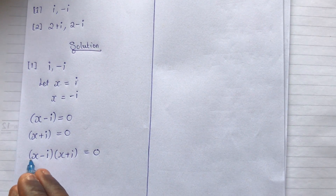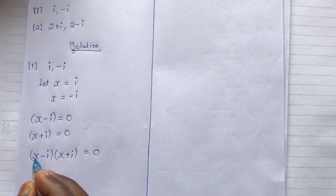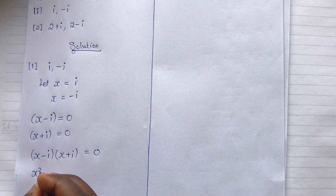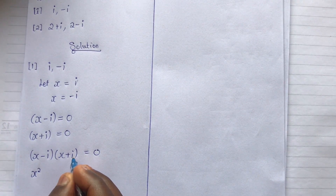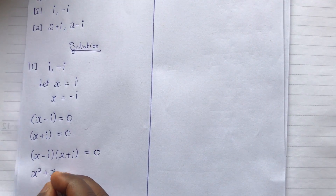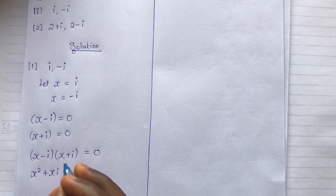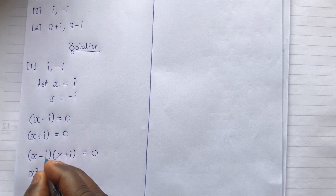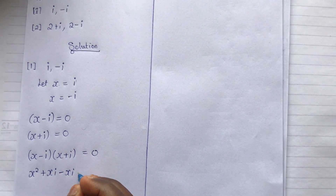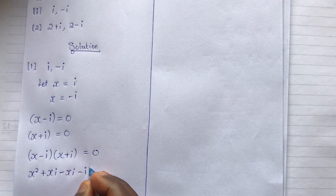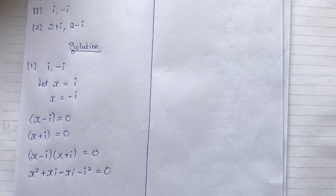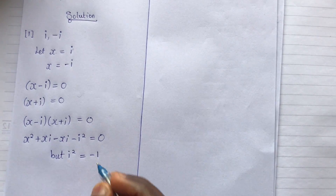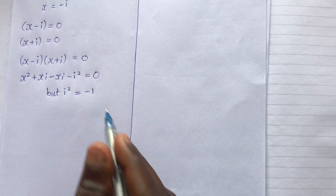We now expand the brackets. x times x gives us x squared. x times i gives us plus xi. Then negative i times x gives us minus xi. And negative i times positive i gives us minus i squared, all equal to zero. We know that i squared equals negative one, so we can substitute that.